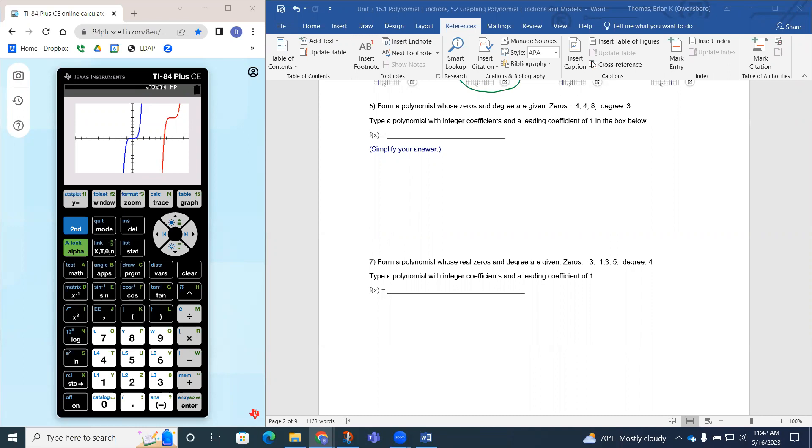So question six says, form a polynomial whose zeros and degree are given. Zero is going to have negative four, four, eight, and the degree is three.